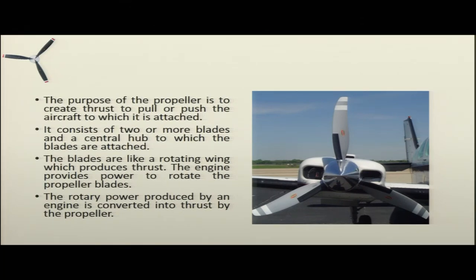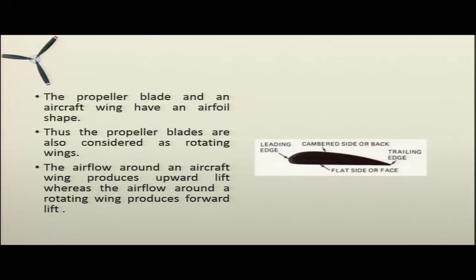The engine provides power to rotate the propeller blades. The rotary power produced by an engine is converted into thrust by the propeller. The propeller blade and an aircraft wing have an airfoil shape. Just like the wings of an aircraft have an airfoil shape, similarly the blades of the propeller also have an airfoil shape. The airfoil shape has a leading edge and a trailing edge.